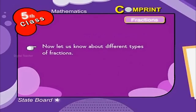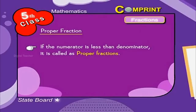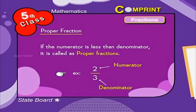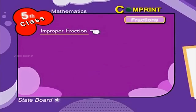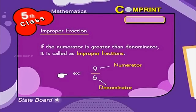Now let us learn about different types of fractions. Proper fractions: if the numerator is less than the denominator, it is called a proper fraction. For example, 2 by 3. Improper fractions: if the numerator is greater than the denominator, it is called an improper fraction. For example, 9 by 6.